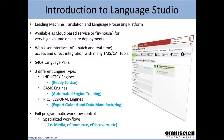First of all, we have what we call industry engines. These are ready to use — just start translating. You don't need to do anything other than start pushing your files through the system. Those industry engines are available in many different domains and industries. Then we have basic engines, which is the lowest level of customisation. It's fully automated and do-it-yourself. You can upload your data and process on your own without any involvement or expert guidance from the Omniscient team. Then we have our professional engines.